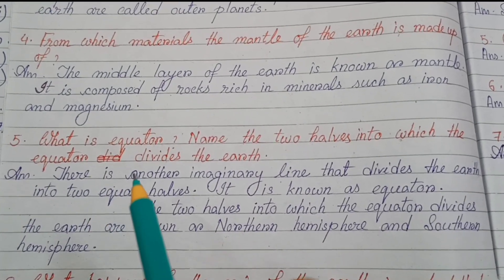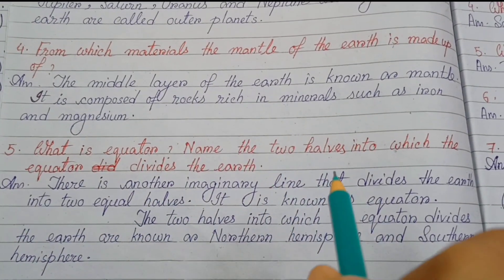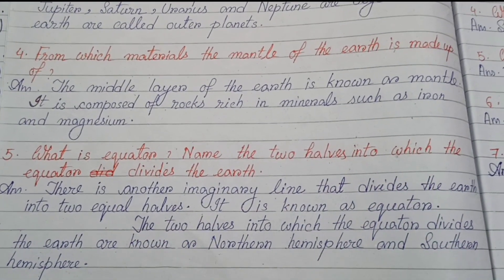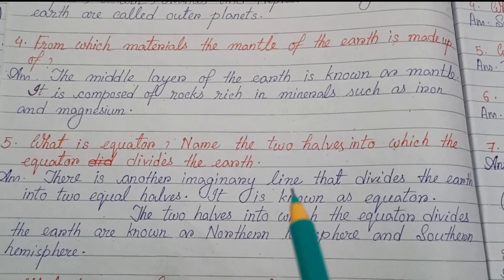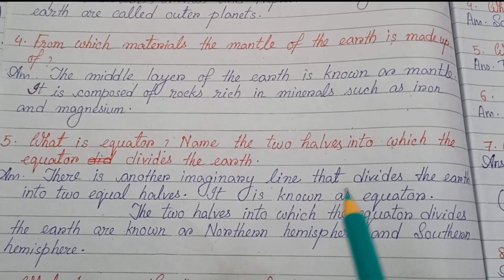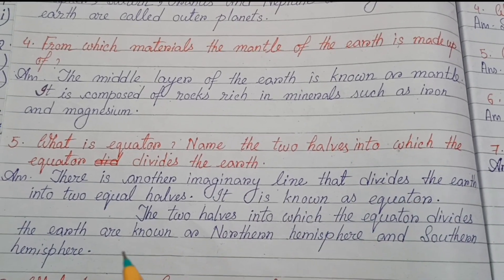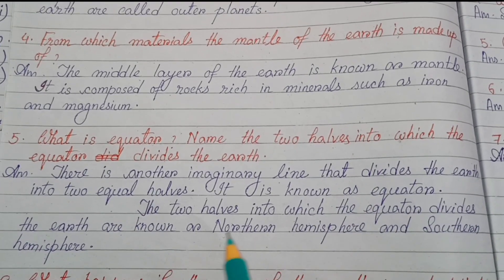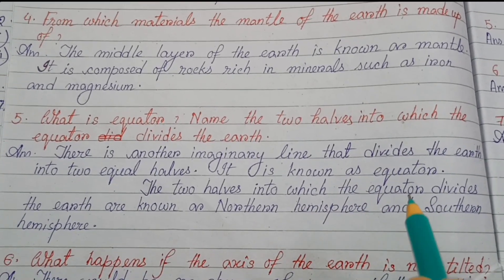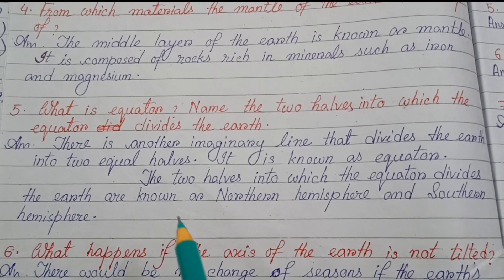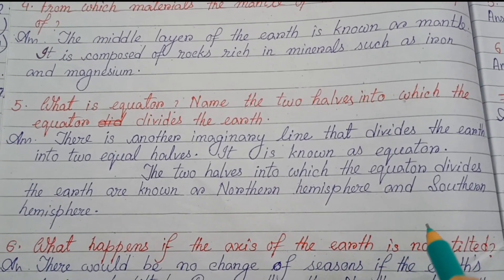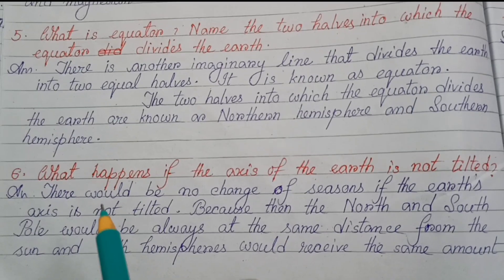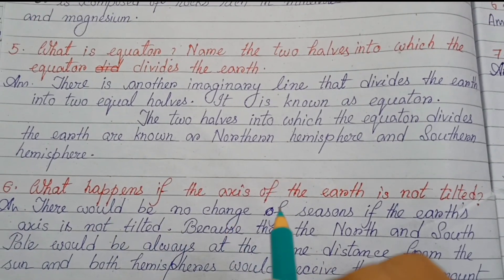Number five: What is the equator? Name the two halves into which the equator divides the earth. There is an imaginary line that divides the earth into two equal halves, known as the equator. The two halves into which the equator divides the earth are known as the Northern Hemisphere and the Southern Hemisphere.